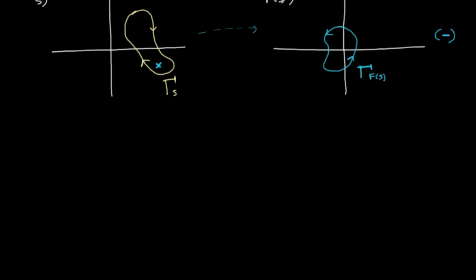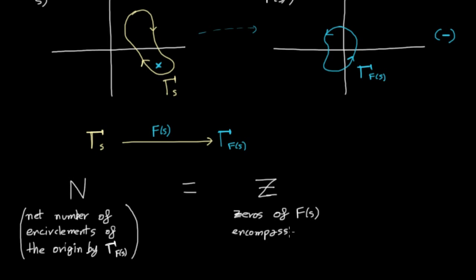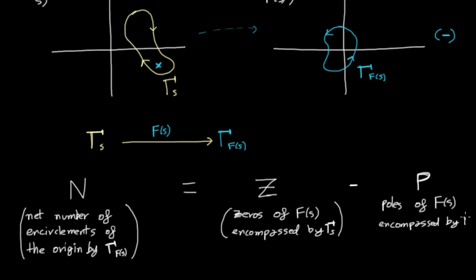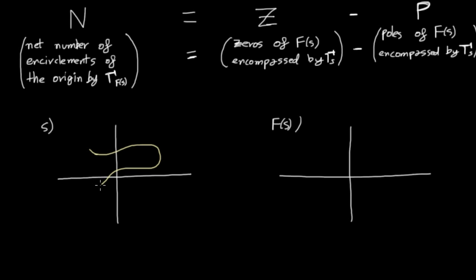In general, the following relation is true. If we take a closed trajectory, gamma s, with certain direction and pass it to the function f generating an image trajectory, gamma f, the net number n of encirclements of the origin by the image trajectory is equal to z, the number of zeros of f encompassed by gamma s, minus p, the number of poles of f encompassed by gamma s.